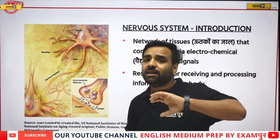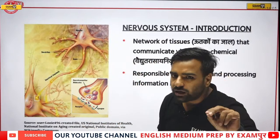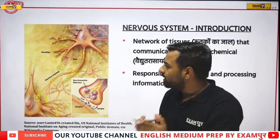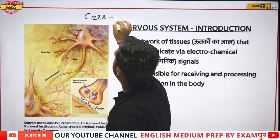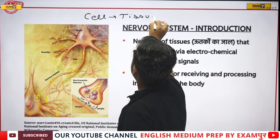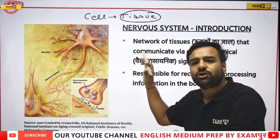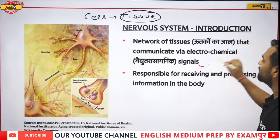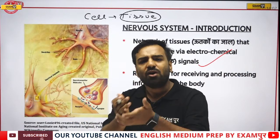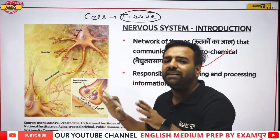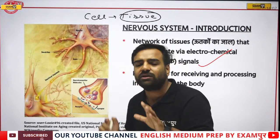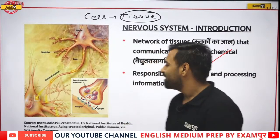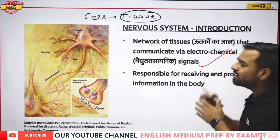The nervous system is actually a network of tissues. We already discussed that cells are the basic unit of life; several cells combine together to form tissue. Since cells are of different types, tissues are also of different types. The nervous system is a network of tissues communicating via electrochemical signals.